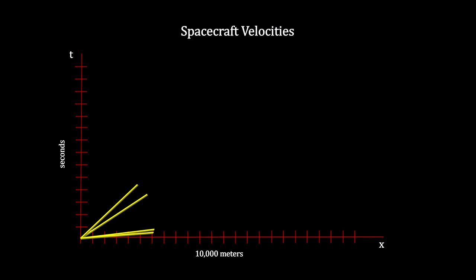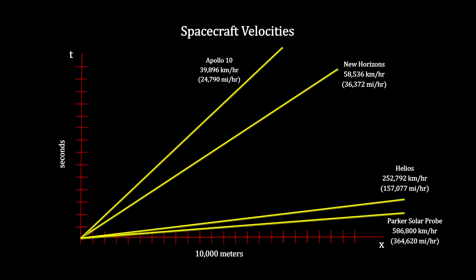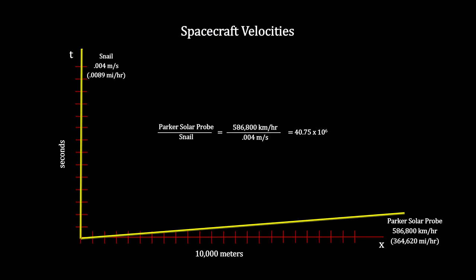At these speeds, we have to increase the distance intervals again. We'll set it at 10 km per mark. That's 6.2 miles. Parker is moving over 40 million times faster than the snail in my backyard.